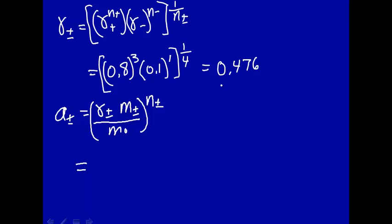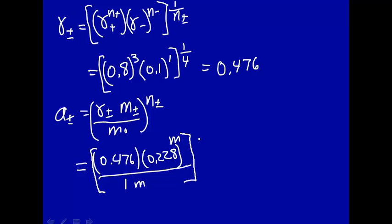Gamma plus minus, 0.476. Average molality, 0.228. Our standard state concentration is 1 molal. This is molal. Activity coefficients don't have units. And this whole thing is raised to the fourth power. So the activity is 1.39 times 10 to the minus fourth.